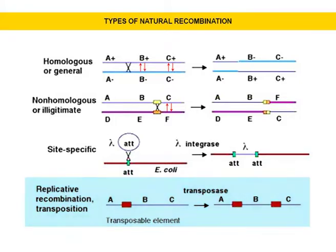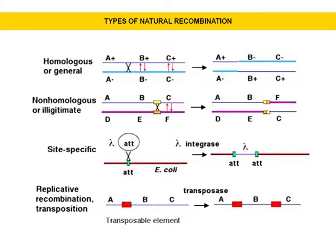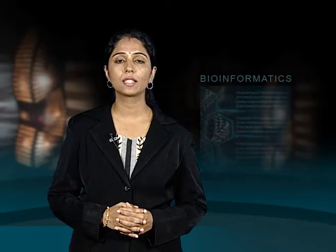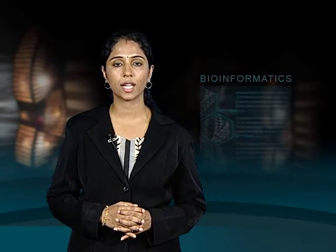Transposable elements or transposons are mobile genetic elements that have selective target sites for insertion and binding. In transposition, a transposase, a specific enzyme encoded by the transposon, acts on a target DNA sequence at each end of the transposon. The enzyme acts by disconnecting it from the flanking DNA and then inserting it into a new target DNA site. There is no requirement for homology between the ends of the element and the insertion site.